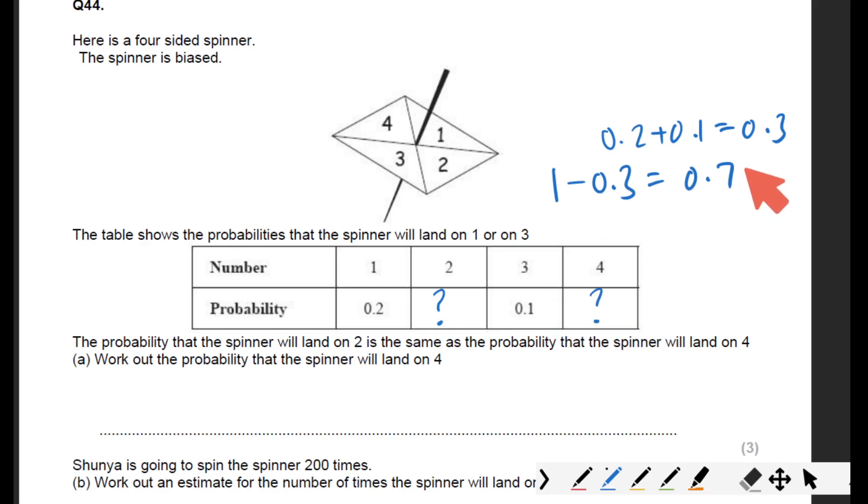Half of 0.7 is 0.35. 0.35 is what I'm going to put here, 0.35. Next question.